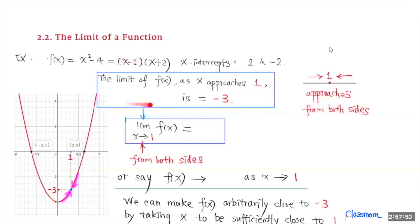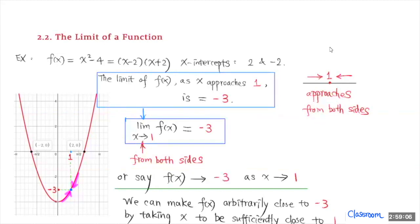Another way to express this is to use this notation. LIM here stands for limit. So the limit of f of x as x approaches 1 from both sides is equal to negative 3. Notice that when you say approaching to 1, you indicate it's approaching 1 from both sides. So the y value is approaching negative 3 — as x approaches 1 from both sides, y, which is f of x, is approaching negative 3.